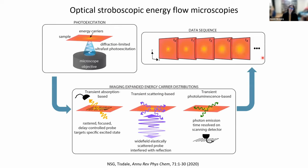When I say optical stroboscopic energy flow microscopy, I mean this collection of techniques that my lab and a number of other labs around the world have been developing over the past decade or so. What they all have in common is that we're following stroboscopically the spatiotemporal evolution of an initially diffraction-limited photoexcitation in some material. There are many different forms of contrast — transient absorption-based approaches, transient photoluminescence-based approaches — and I'll focus primarily today on transient scattering-based approaches.